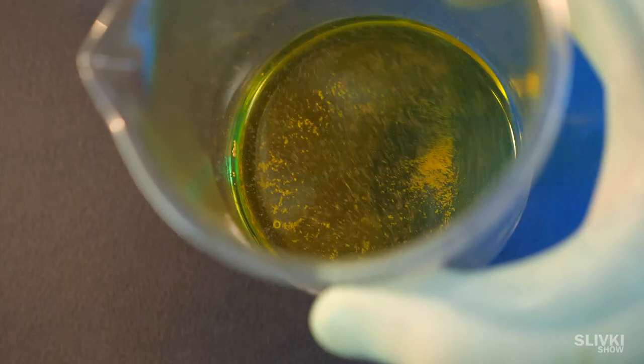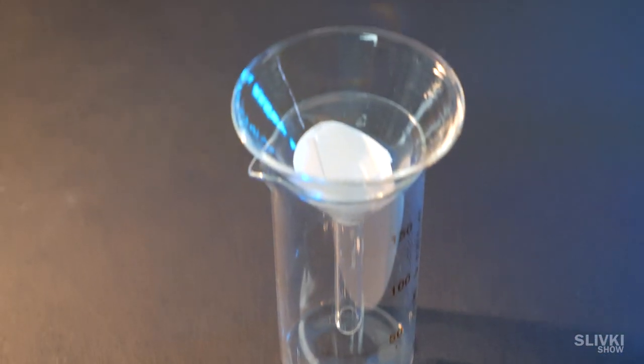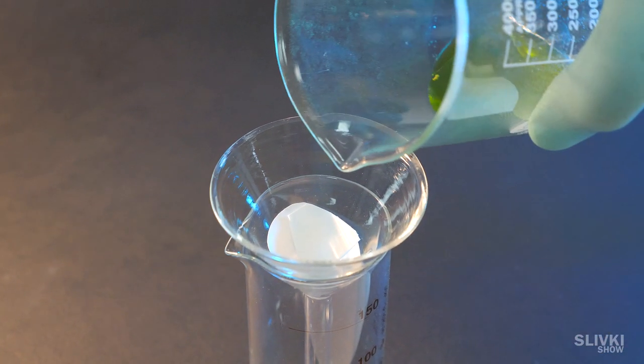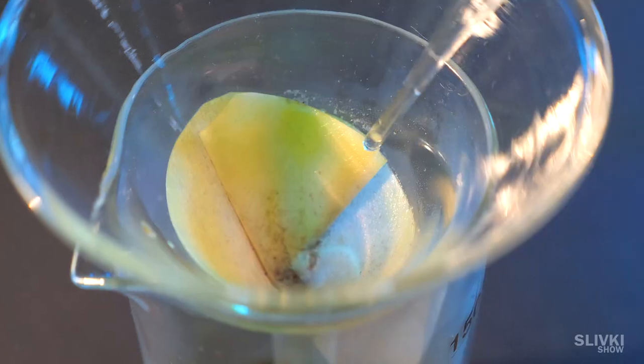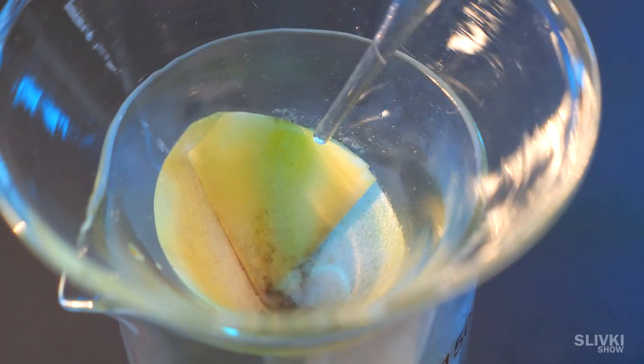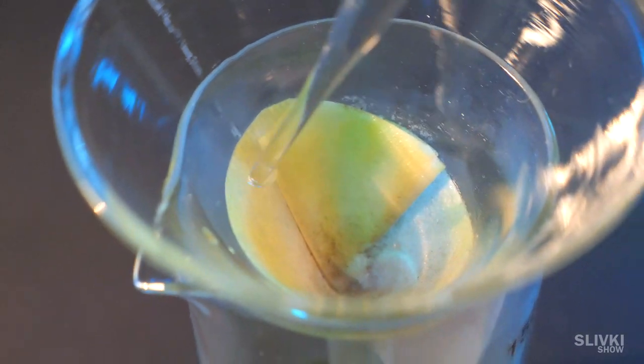In this process, we got a little bit of sludge. That's why we take a different container and transfer the substance with gold through a filter. And the filter itself we rinse with water so it won't have any precious gold liquid.